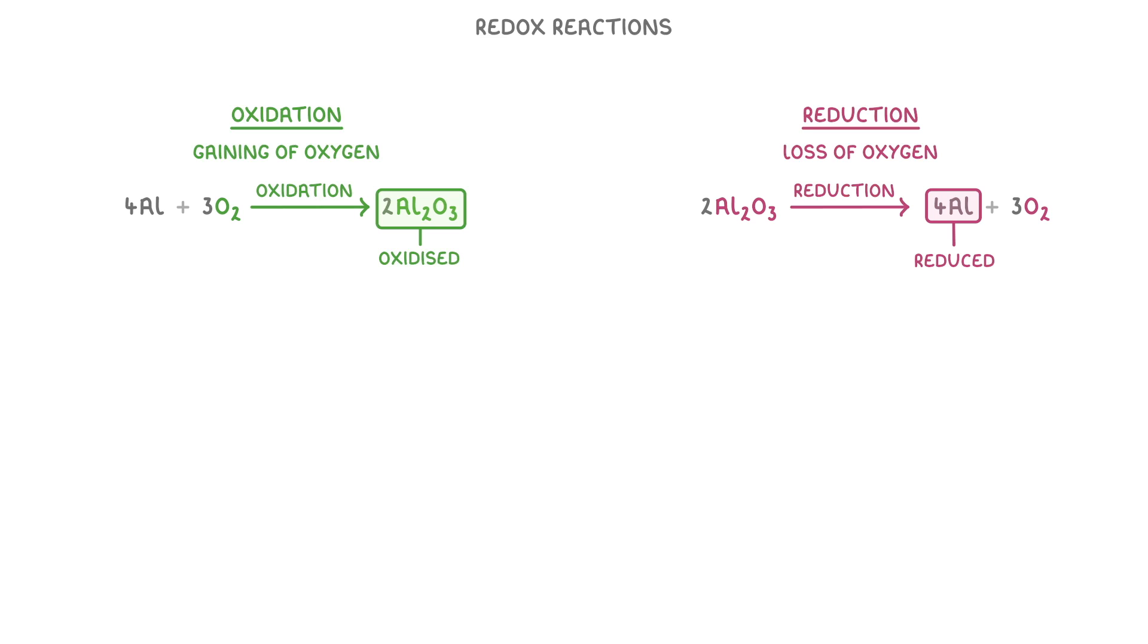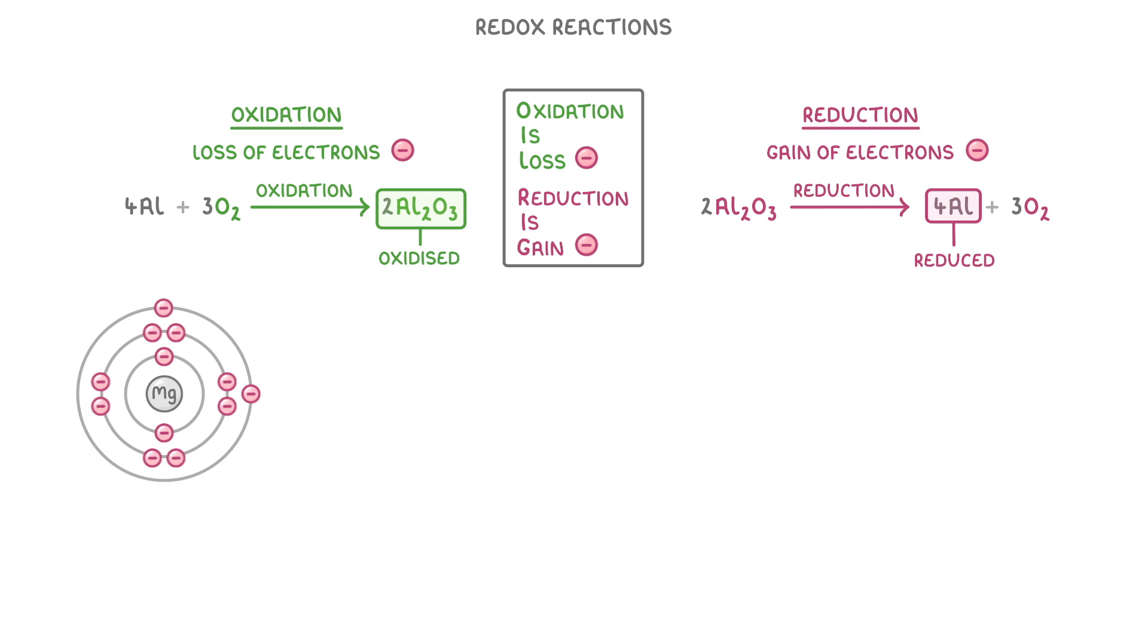The terms oxidation and reduction can also refer to the loss and gain of electrons though. And instead of just remembering which is which, most people use the mnemonic OIL RIG, which stands for oxidation is loss, reduction is gain, and this refers to electrons. So if we had a magnesium atom, and it loses two electrons to become a 2+ ion, then it's been oxidised. And if it gained those two electrons back, then it would have been reduced.